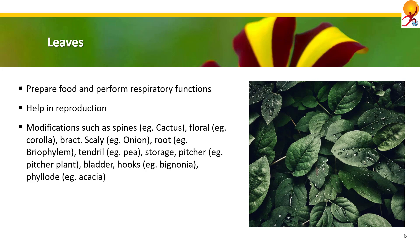Leaf root: in this modification, leaves transform into roots — example bryophyllum. Leaf tendril: in which modification leaves take the form of tendrils — example pea plant. Storage leaves: in this modification leaves store food and become thickened and tuberous. Pitcher: leaves trap insects and modify themselves to form bags — example pitcher plant. Bladder: in this modification leaves transform themselves into the form of a bladder to trap aquatic insects — example utricularia. Leaf hooks: in this modification leaves turn like hooks — example bignonia.